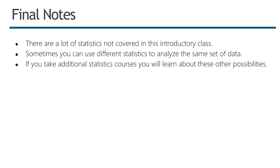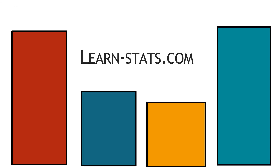We covered a lot of statistics quickly in this video, but there are many statistics not covered in this introductory course. Sometimes you can use different statistics to analyze the same set of data — technically you can use an ANOVA for two groups as well — but for now we want to focus on making clear distinctions about when to use different tests. I hope that helps you learn to distinguish between the different statistics and when to use them. Now you can go ahead and practice using the activities in the book.